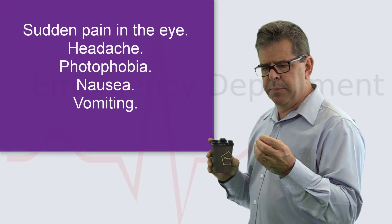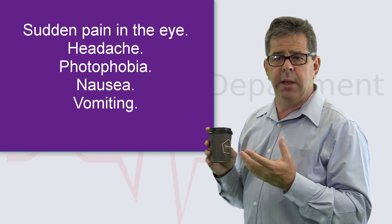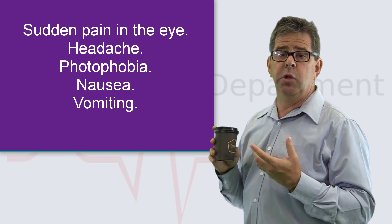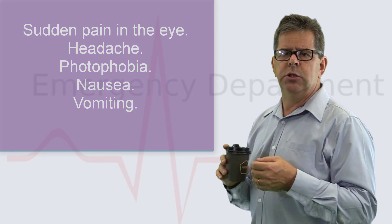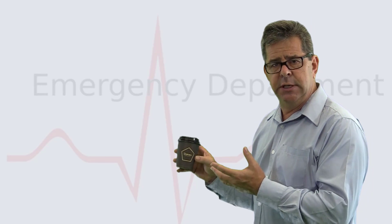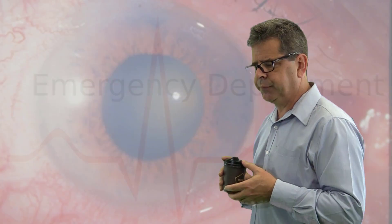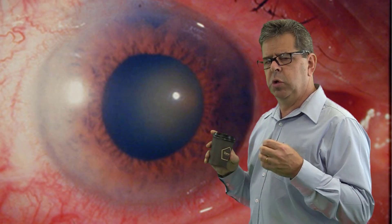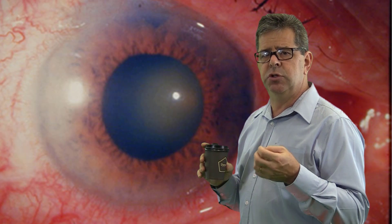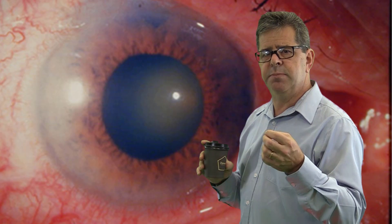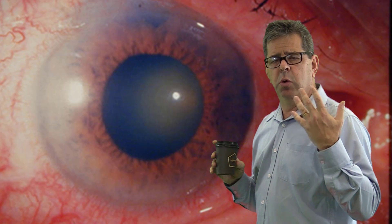Patients get sudden pain in the eye, headache, and photophobia. They can have overwhelming nausea and come in vomiting and can look dreadful. Often they get a Category 2 triage and are seen fairly quickly. On examination you can see decreased visual acuity, and one of the reasons is that the cornea is cloudy.